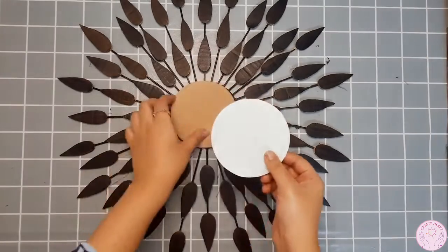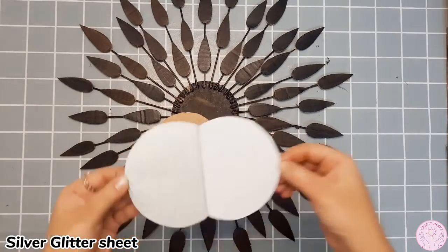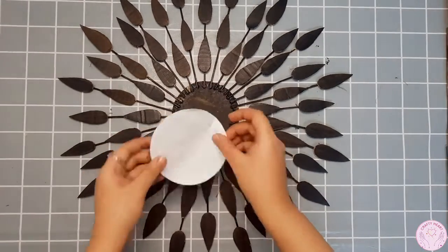And other cardboard circle cut I covered it with silver glitter sheet and now I am gluing it in the middle of my piece.